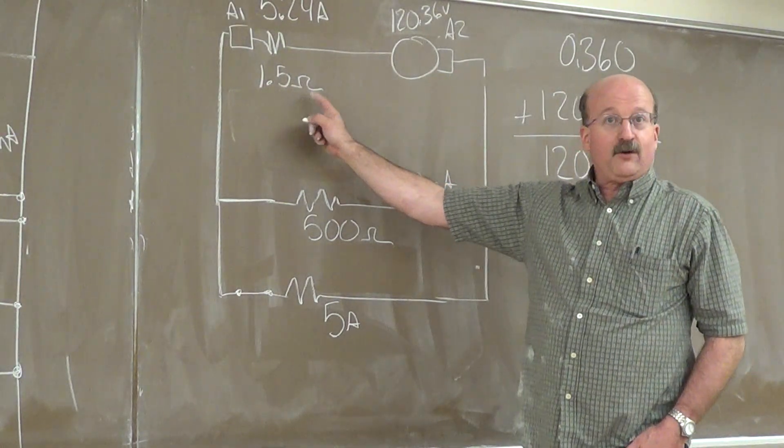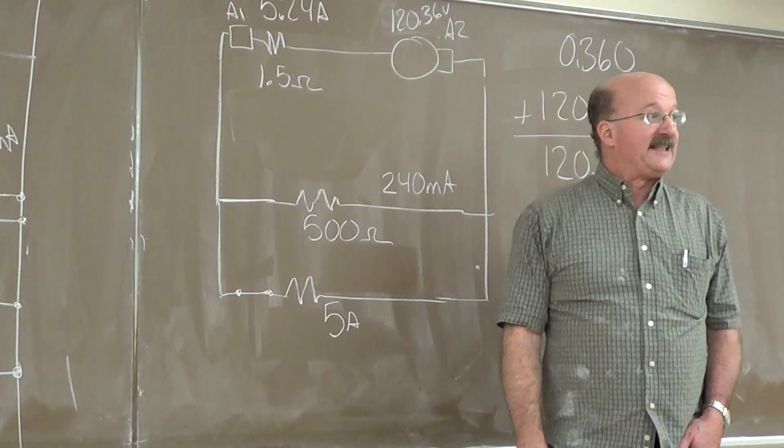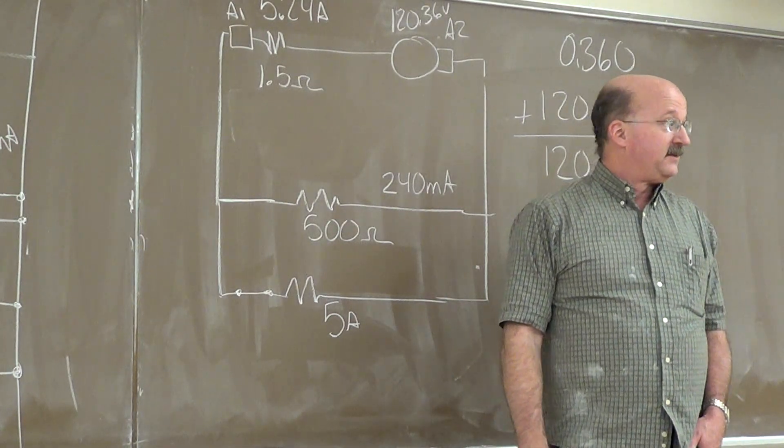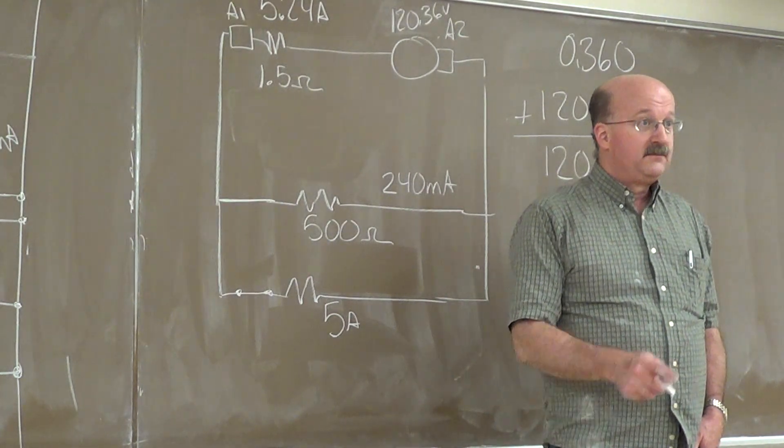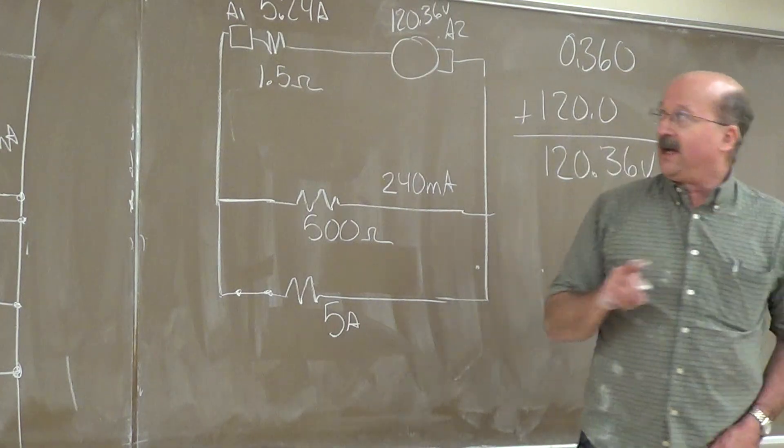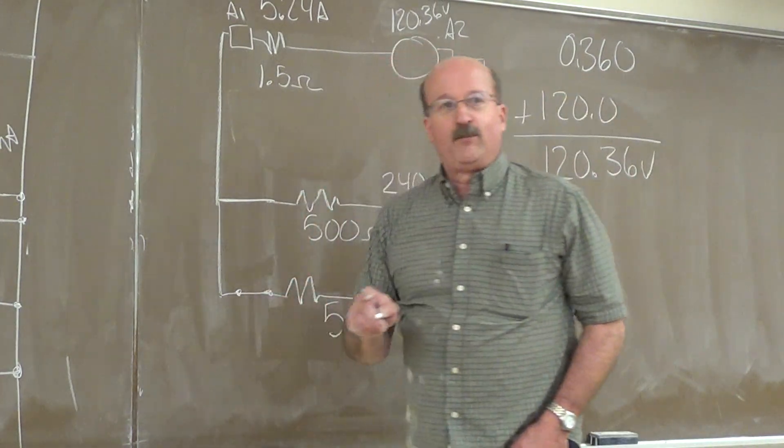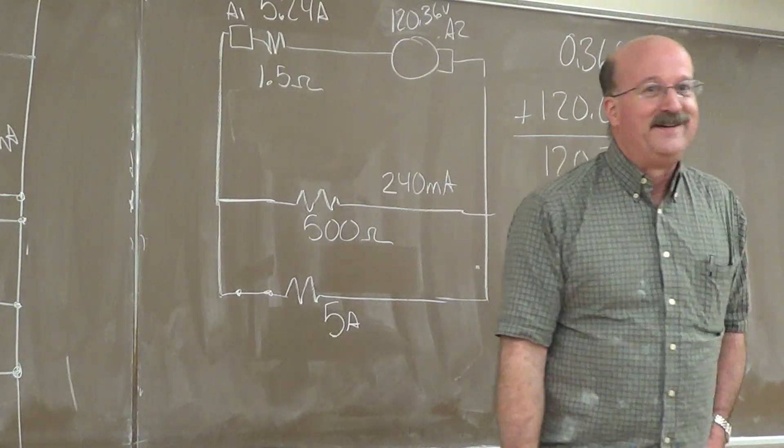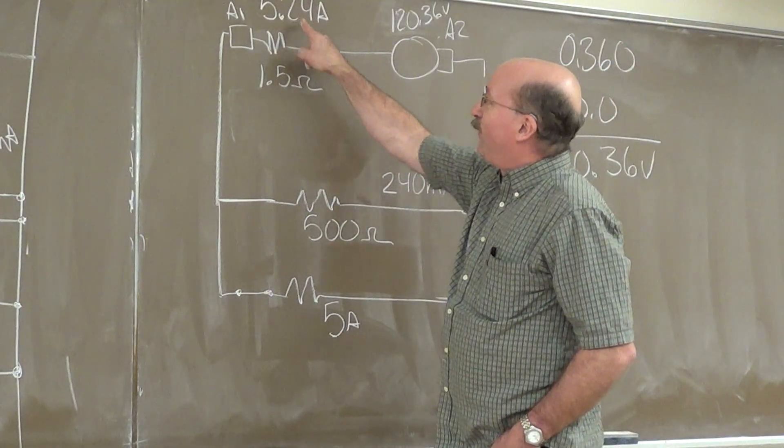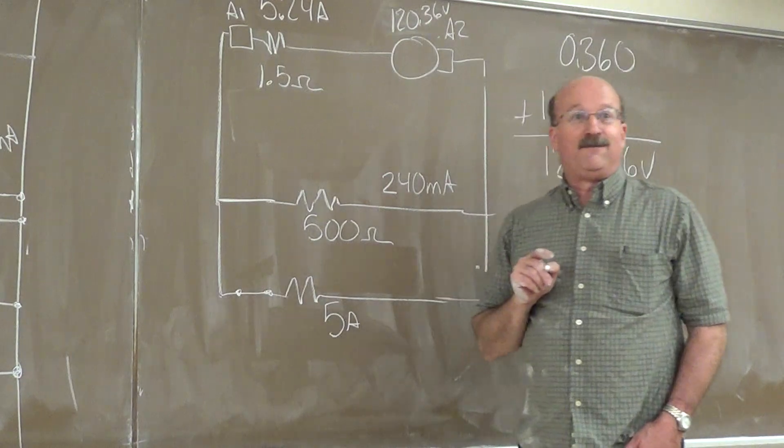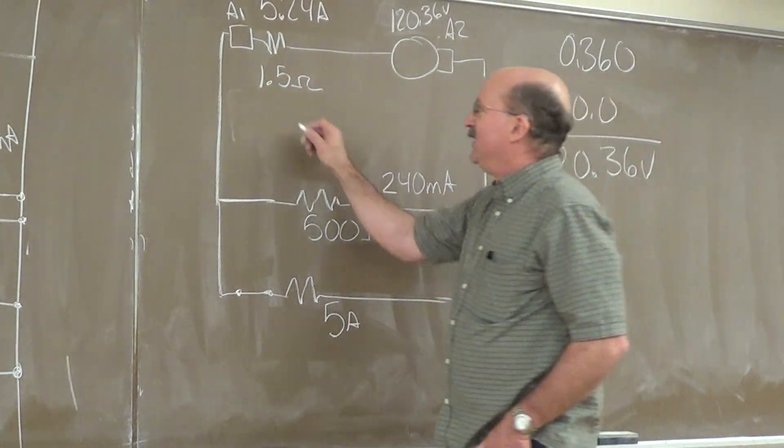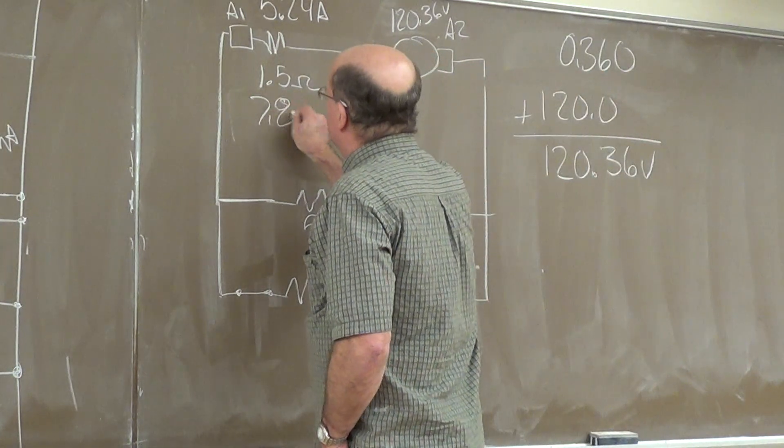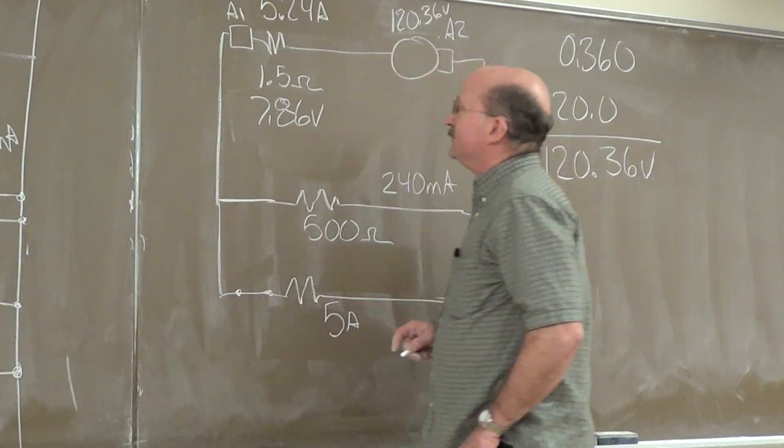Does that give us an internal voltage drop of 7.86 amps? Is that correct? Yes. I'm sorry, 7.86 volts. Let me weigh on that one. 5.24 amps times 1.5 ohms gives us 7.86 volts.